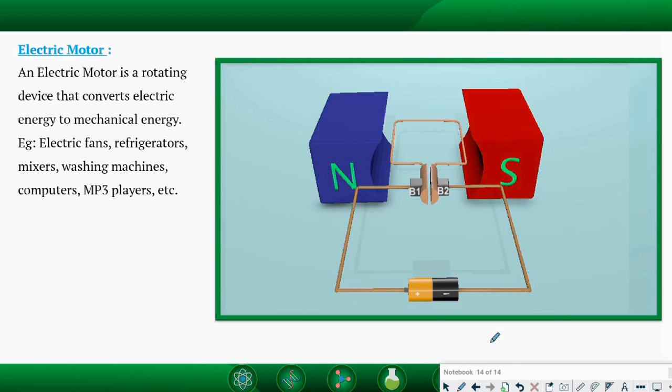In the electrical motor, you can see the input energy is electrical energy through a battery and the output will be the movement of the axle.